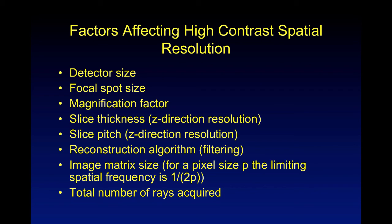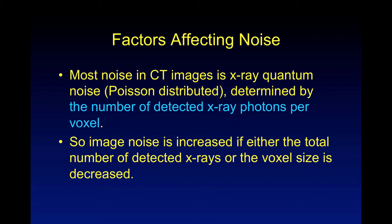Just like MR, we need to talk about factors affecting high-contrast spatial resolution: detector size, spot size, magnification factor, slice thickness, slice pitch, reconstruction algorithms, image matrix size, and the total number of rays acquired. Most noise in CT images is x-ray quantum noise — it's Poisson distributed, determined by the number of detected x-ray photons per voxel. Image noise is increased if either the total number of detected x-rays or the voxel volume size is decreased — less signal gives you more noise.